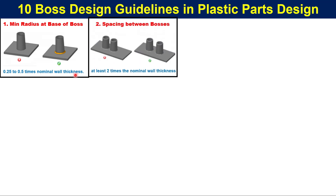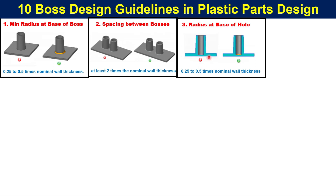Guideline 2: Spacing between bosses. When bosses are placed very close to each other, it creates thick areas that are very difficult to cool, which can affect the quality and productivity of the part. It is recommended that the spacing between bosses should be at least two times the nominal wall thickness.